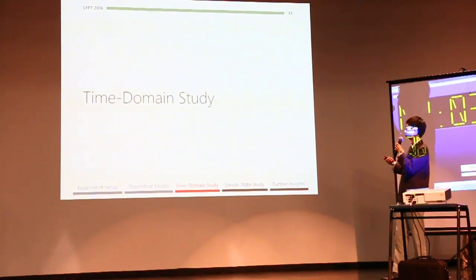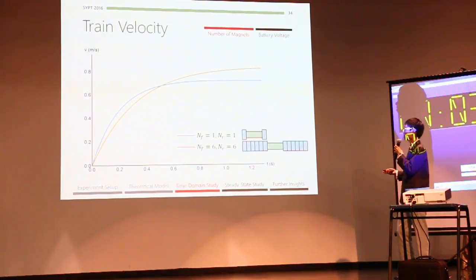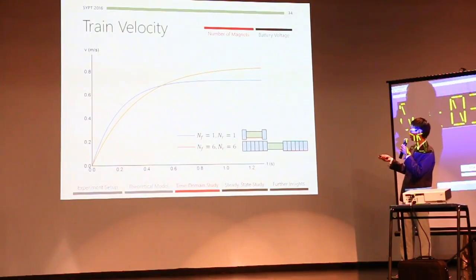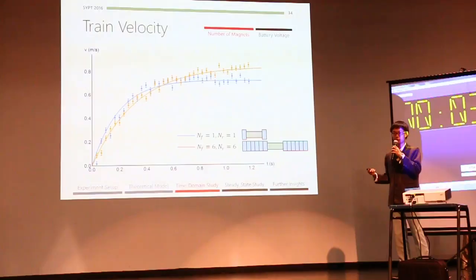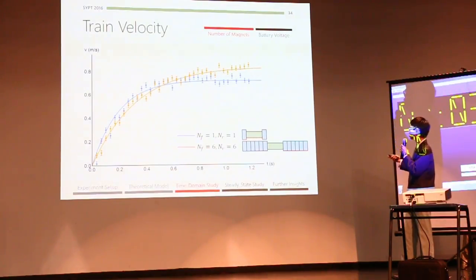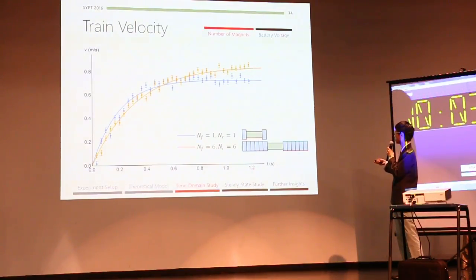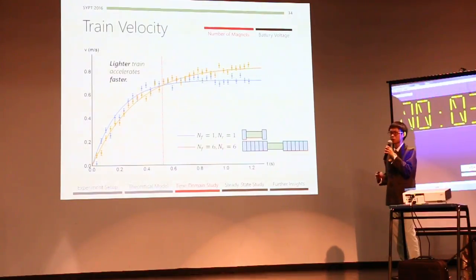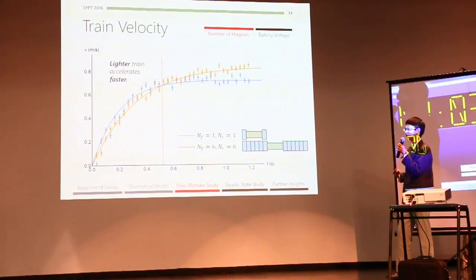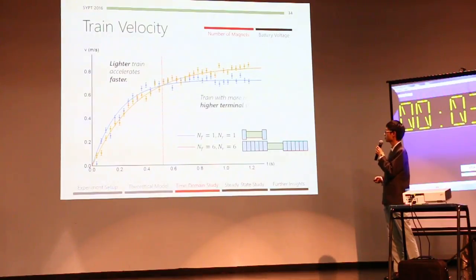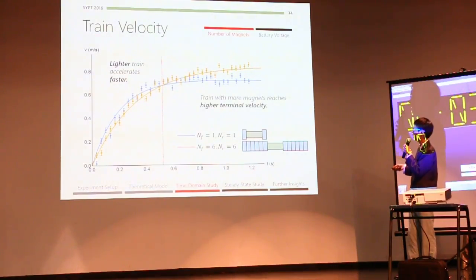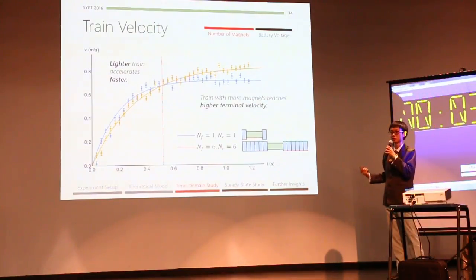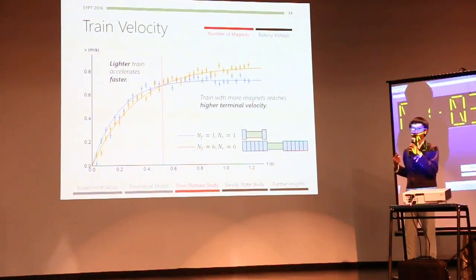So, I will now discuss my time domain results. Here we see a graph of train velocity against time, and this is the theoretical line. And we can see that our data matches our lines very well. This is for two different trains with different number of magnets on each end. And we see that initially, the lighter train with only one magnet on each end accelerates faster, because it is more lightweight. And towards the end of the run, the train with six magnets on each end accelerates to a higher terminal velocity. This is because it is able to produce a higher driving force.